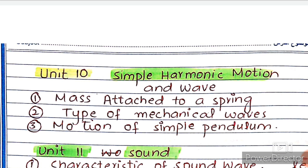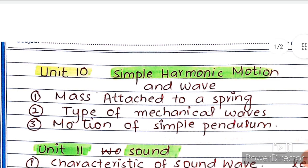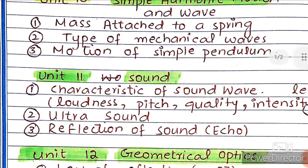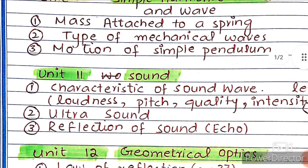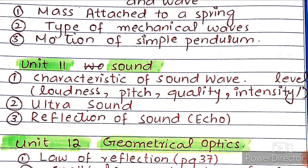Next chapter number 11 is sound. We have three important topics: characteristics of sound waves including loudness, pitch, quality, intensity, and density level characteristics are important. Second topic which is important is ultrasound.